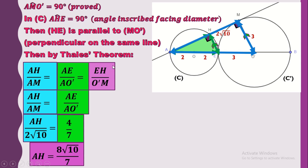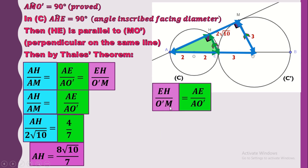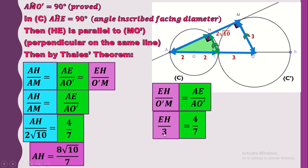For the length of EH, we use the fraction EH over O prime M equals AE over AO prime. O prime M equals 3, since it is the radius of circle C prime, which is half the diameter. With AE equals 4 and AO prime equals 7, moving 3 to the other side gives EH equals 3 times 4 over 7, so EH equals 12 over 7.